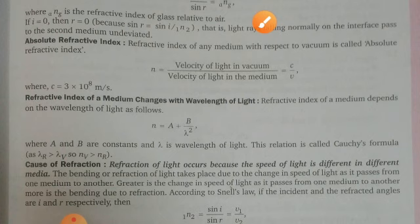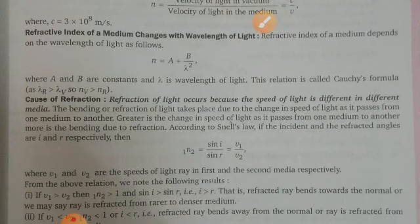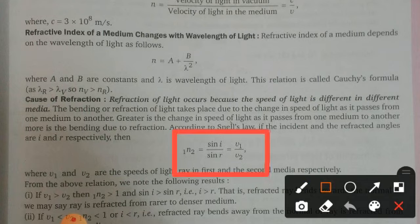Greater is the change in speed of light as it passes from one medium to another, more is the bending due to refraction. According to Snell's law, if the incident and refracted angles are i and r respectively, then ₁n₂ = sin i / sin r, and we can also write sin i / sin r = v₁/v₂, where v₁ and v₂ are the speeds of light in the first and second media respectively.